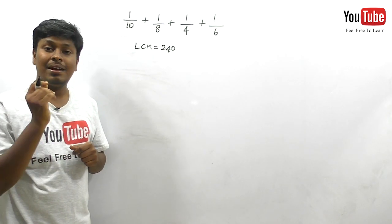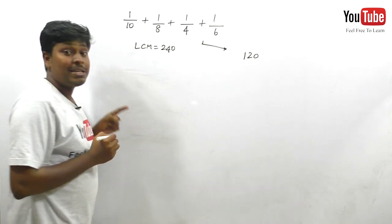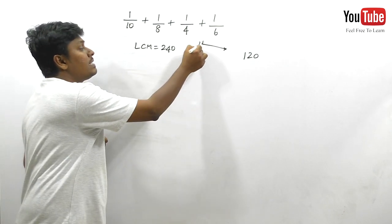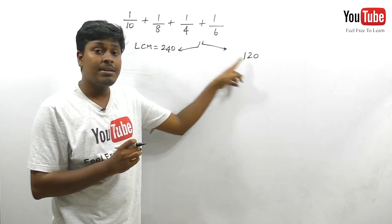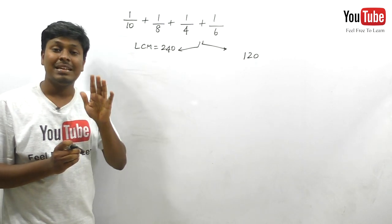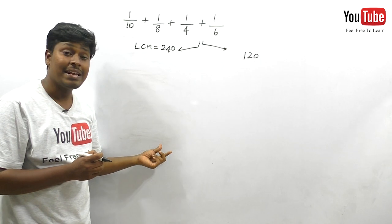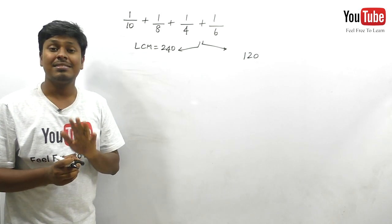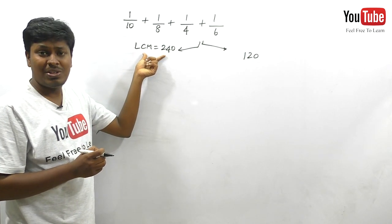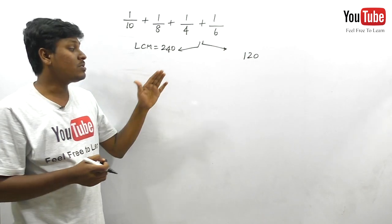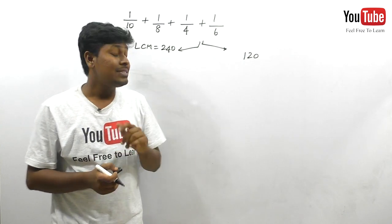By the shortcut method we got LCM = 240, but by the traditional school method you get LCM = 120. Most students will say the shortcut method is wrong. Let me show both methods — the LCM itself doesn't matter; what matters is whether the final answer is correct. I'm going to solve using both methods to show the resultant is the same.